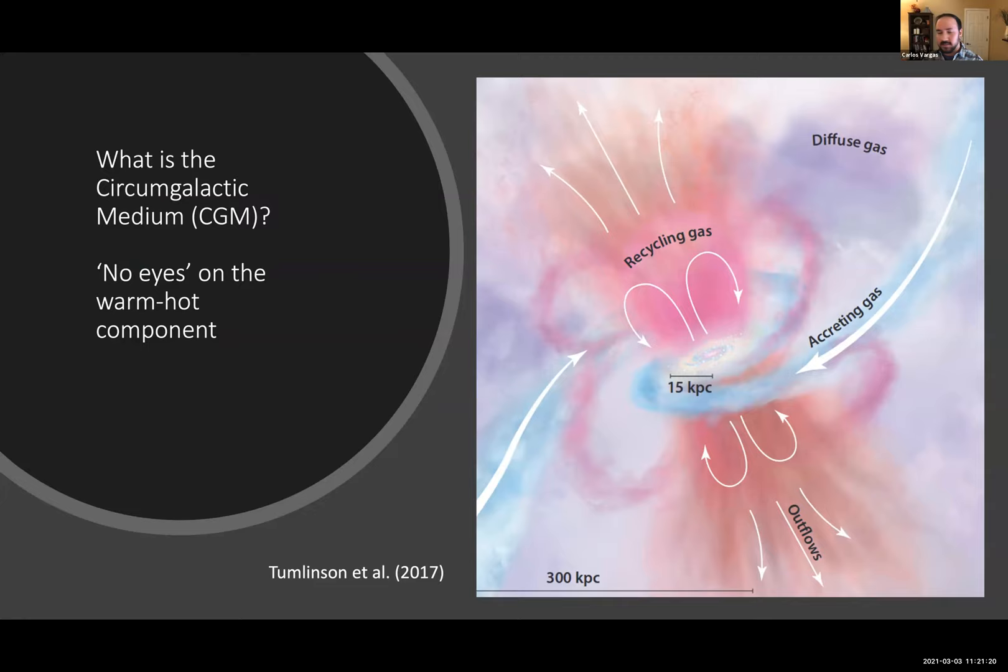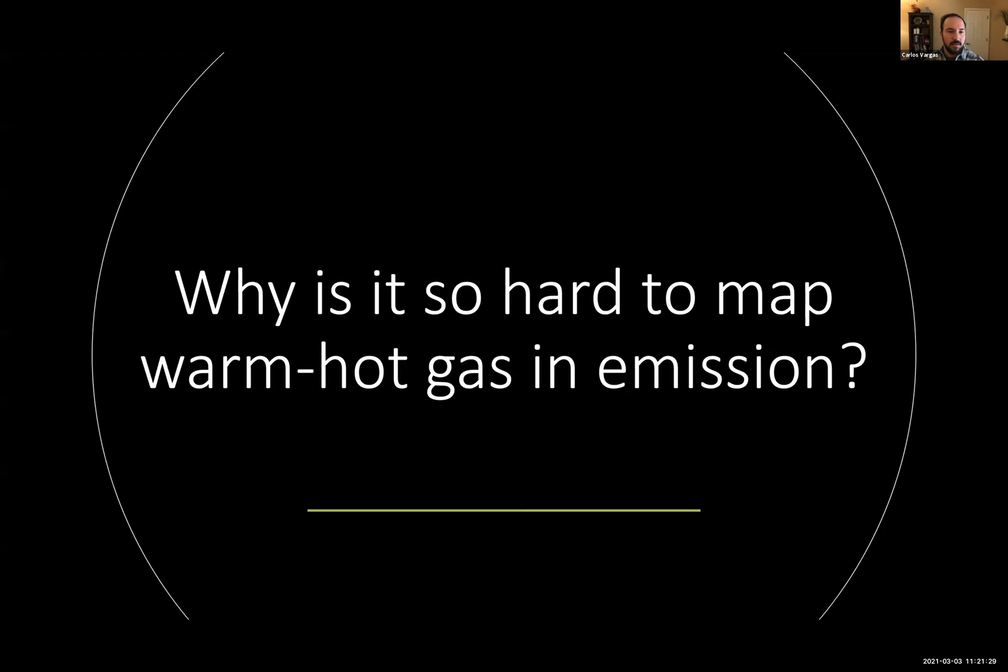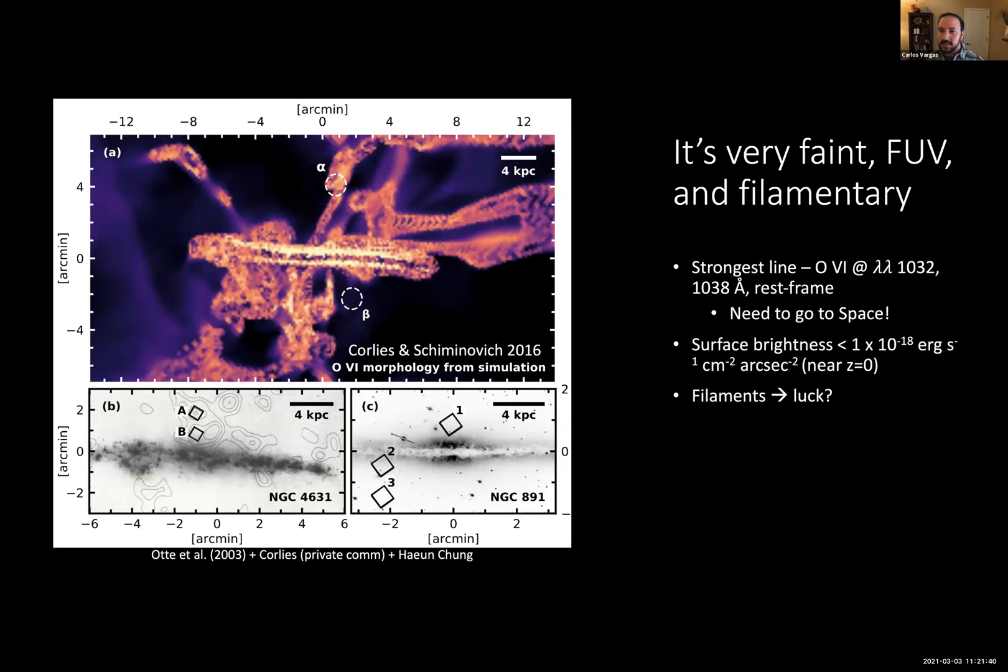As Jess brought up, Oxygen-6 is extremely important for the galaxy evolution equation, and ASPRA focuses also on this question in a similar way. So I first started this journey with ASPRA asking one big question: Why is it so hard to map warm hot gas in emission?